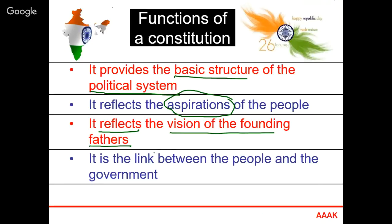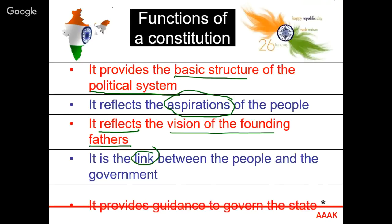The constitution provides a link between the people and the government — what the government can expect from the people and what people can expect from the government. It is the binding link between the people and the government. It also gives guidance to the government about how to govern the nation — how a state is to be run, how a government is to be run. This basic guideline for running a nation is given by the constitution.